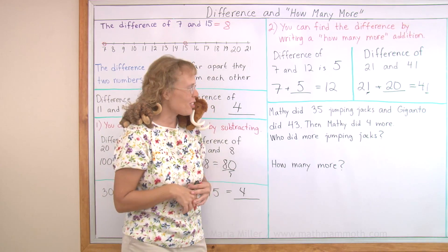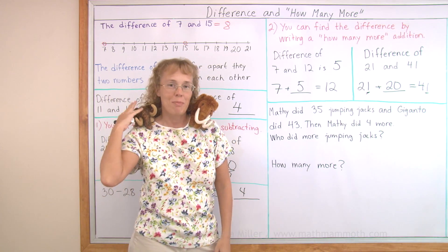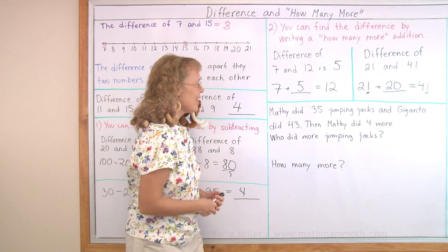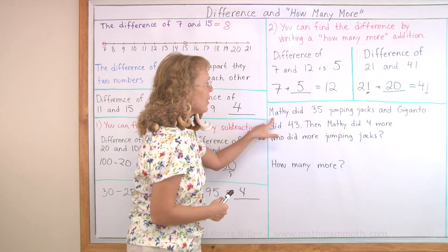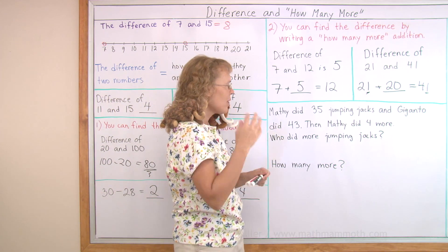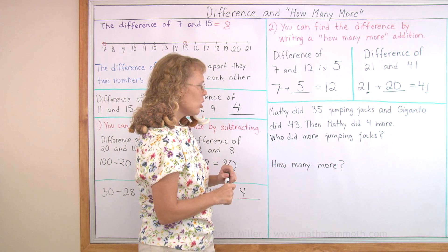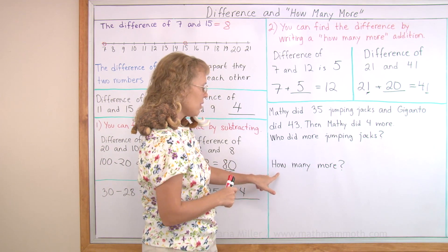And now, lastly, we get to solve a word problem with Mathie and Giganto. Giganto is Mathie's cousin, you remember? Mathie did 35 jumping jacks and Giganto did 43. And then Mathie did 4 more. Who did more jumping jacks? How many more?